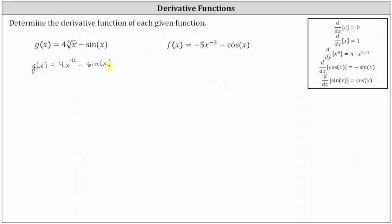Now that we have the square root of x written as x to the power of 1 half, we can find the derivative using the power rule of differentiation. So g prime of x is equal to the derivative of 4x to the power of 1 half minus sine x with respect to x, which equals 4 times 1 half times x to the power of 1 half minus 1, minus the derivative of sine x, which is cosine x.